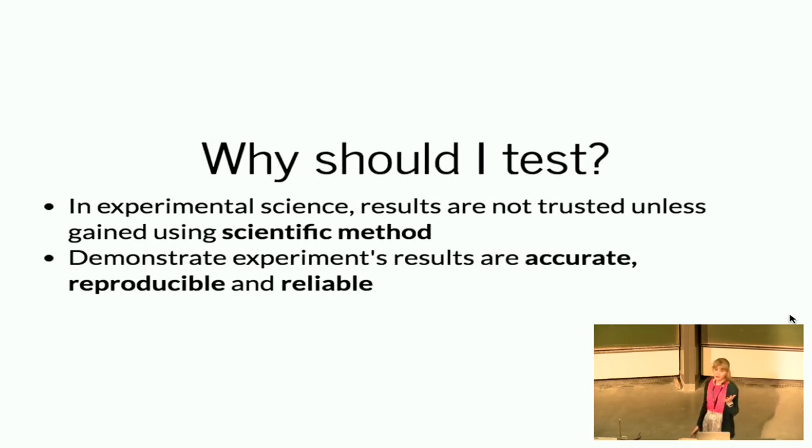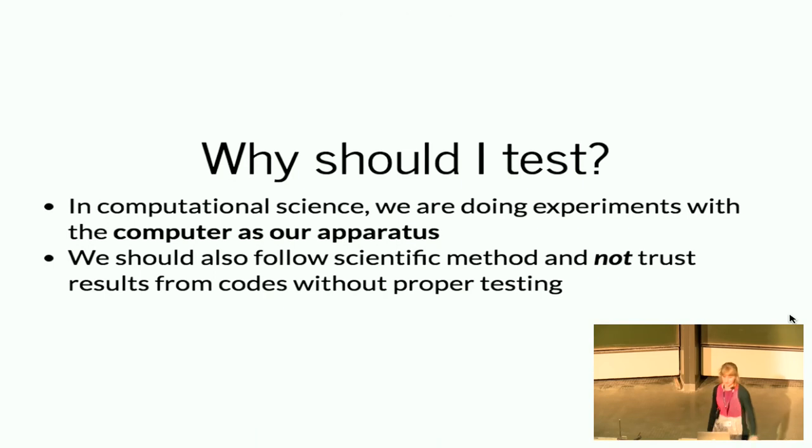Okay so first why should we test? So I'm an astrophysicist, hence the stars at the start. So I have a physics degree and in my physics degree we had lots of courses on experimental methods, so I was really taught how to make proper experiments and have rigorous testing. In experimental science you don't trust results unless you've really demonstrated you've followed the scientific method. So you've shown to the best of your ability that your results are accurate, that they are reproducible and that they are reliable. And if you don't have this, no one is going to publish your amazing results, and no one's going to trust it hopefully, though maybe not after the keynote we heard earlier. But in theory that's what happens in experimental science.